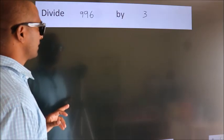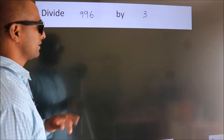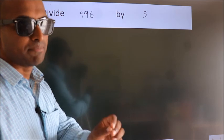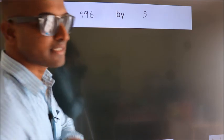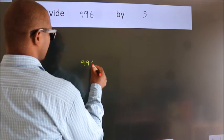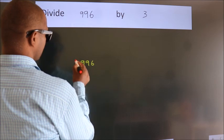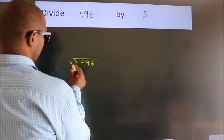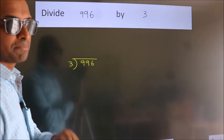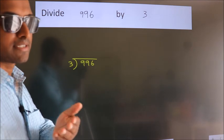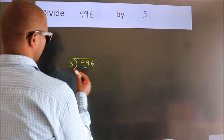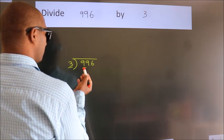Divide 996 by 3. To do this division, we should frame it in this way: 996 here, 3 here. This is your step 1. Next, we have 9 here and 3 here.